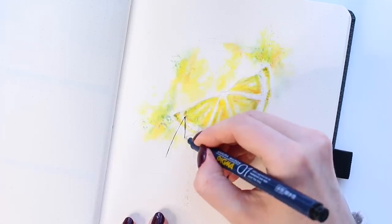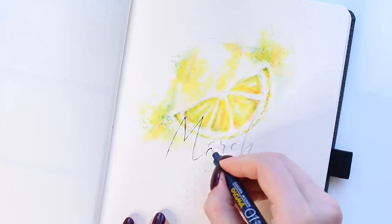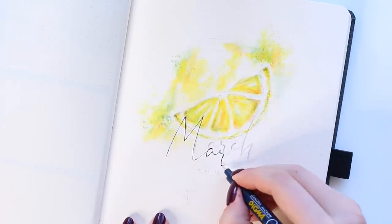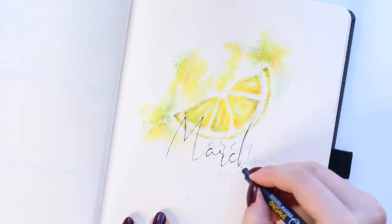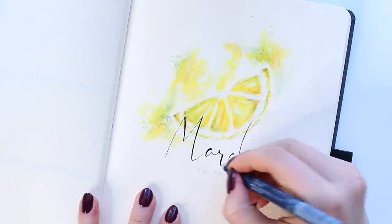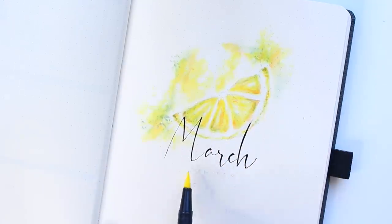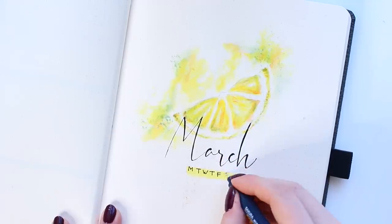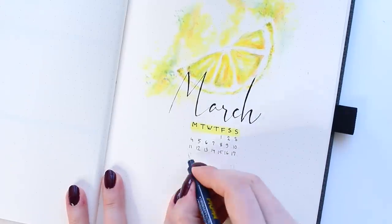After the drawing is done, I'm just writing March in this bigger font underneath the lemon. And I'm also drawing this small calendar here, I just like how it looks on the cover page.